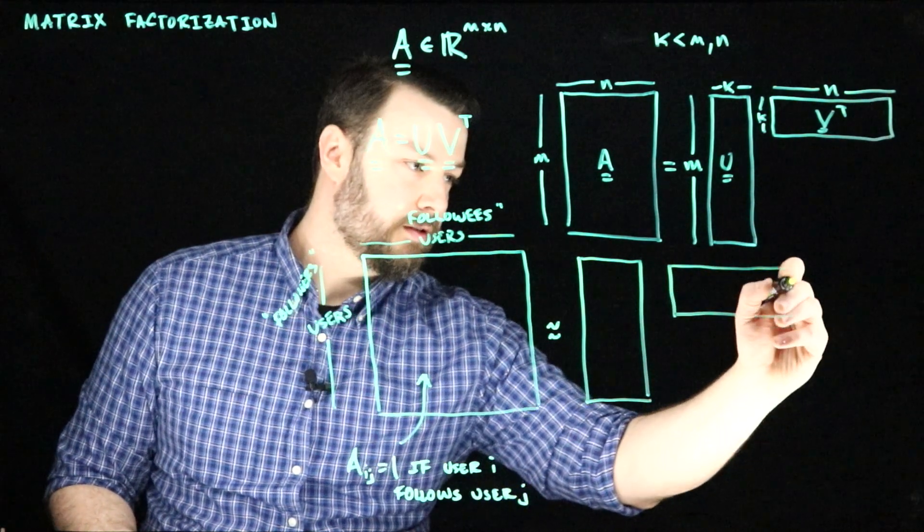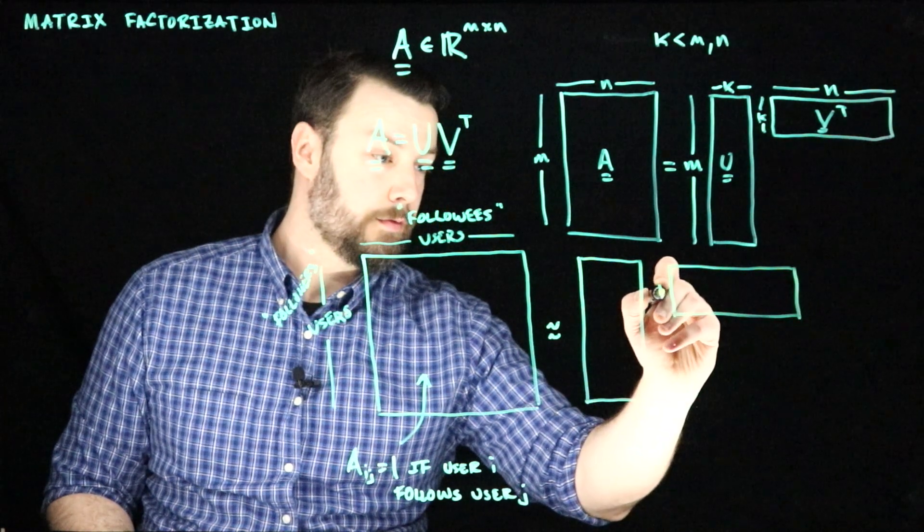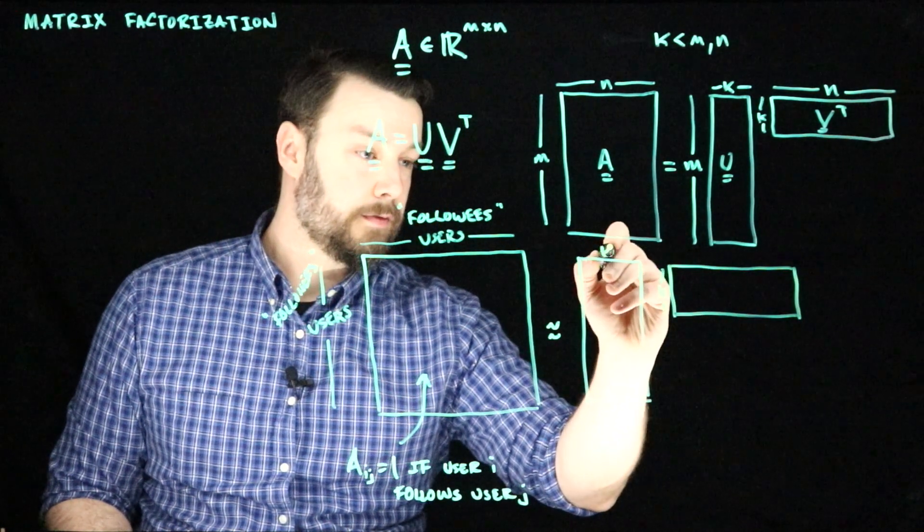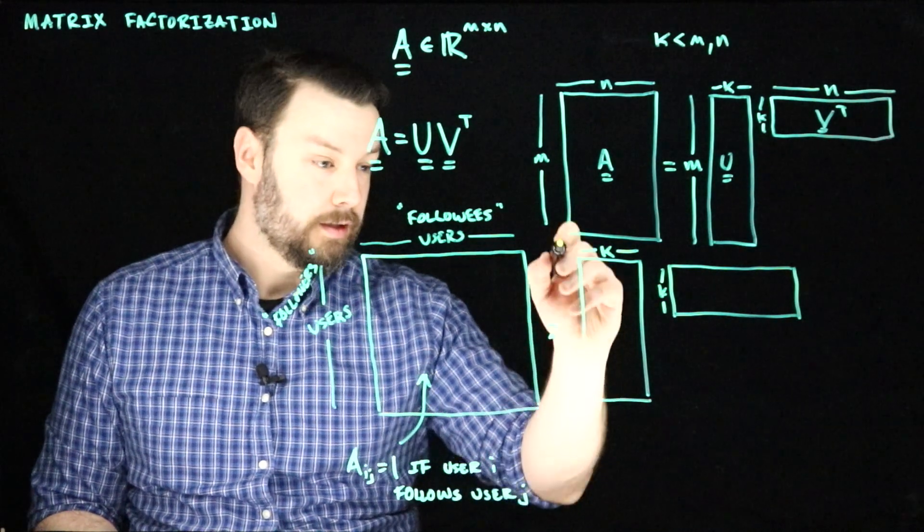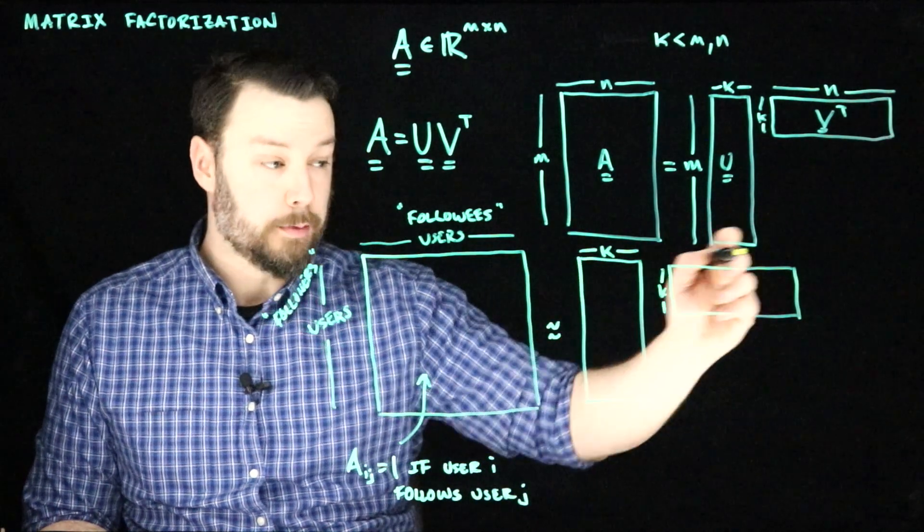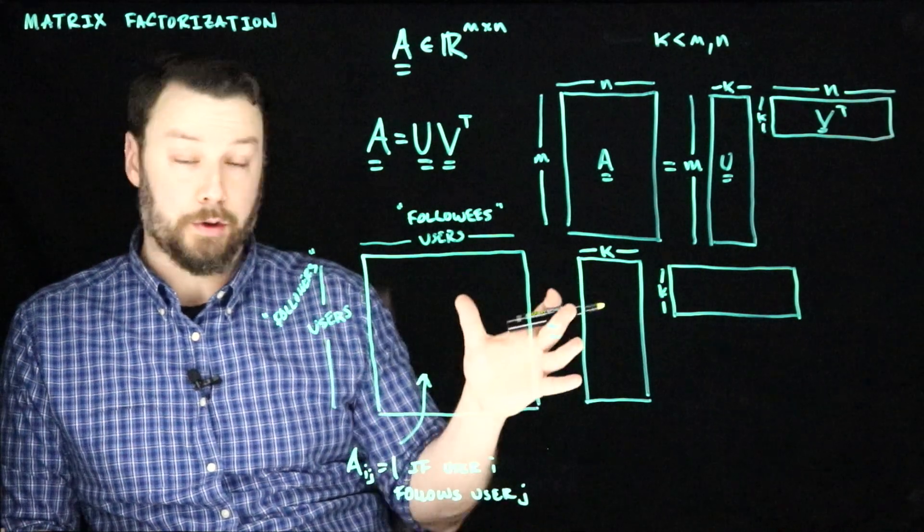And now in this case, there's some low dimensional, we'll say again, K inner dimension. But now in both cases, the number of rows and the number of columns here are the same because they're both users.